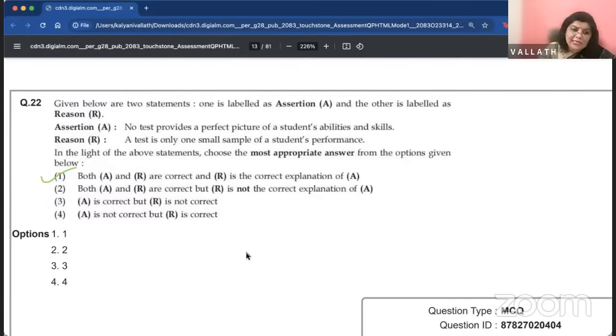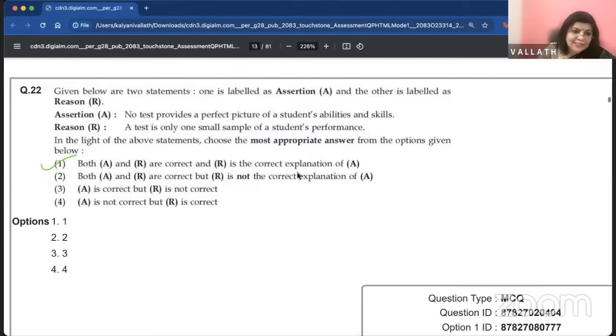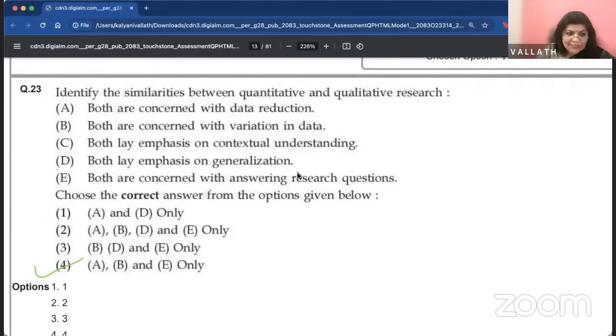According to classical Indian school of logic, sound is eternal because it is audible. That's absolutely wrong. It is correct. That is fallacious. According to classical Indian school of logic, the argument sound is eternal because it is audible commits the fallacy of irregular middle term where the middle term is too wide. That is not correct. No test provides a perfect picture of a student's abilities and skills. A test is only one small sample of a student's performance. That is also correct.